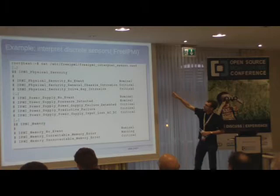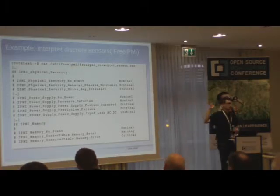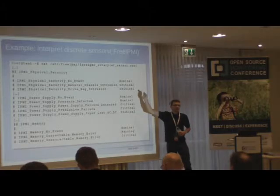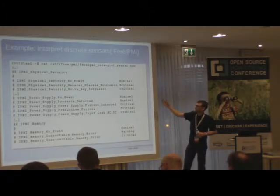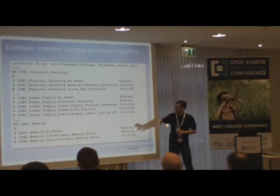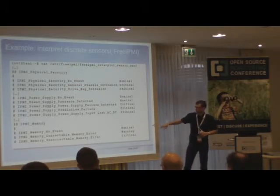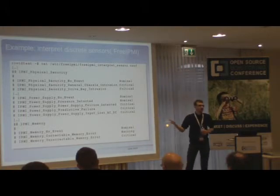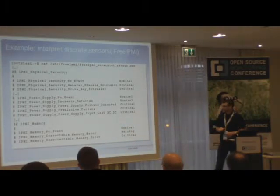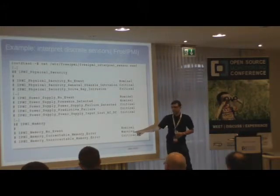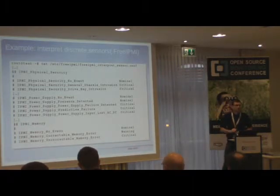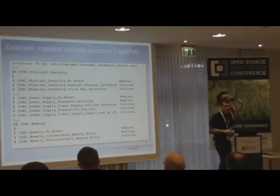There is a file called freeipmi-interpret-sensor.conf with a very useful default configuration. It contains a list of all those discrete status definitions — things about physical security, power supply, and memory. For memory, it distinguishes between correctable ECC errors, which are single-bit errors, and uncorrectable ECC errors with two failing bits. The default configuration gives a warning for correctable ECC errors, but if you want a critical alert from Icinga, you just set it to critical and you're done.